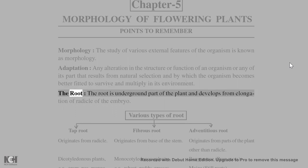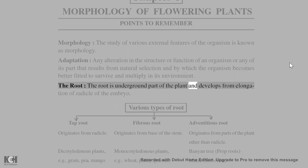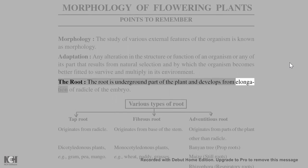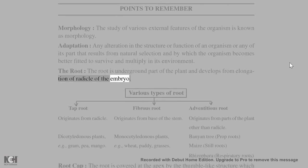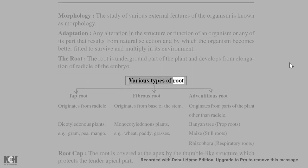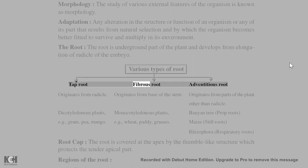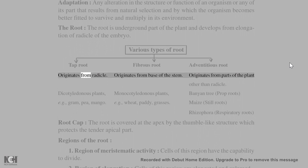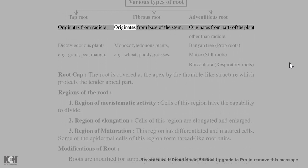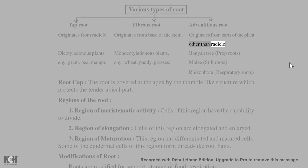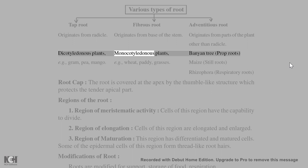The root is the underground part of the plant and develops from elongation of the radicle of the embryo. Various types of roots: tap root originates from the radicle (found in dicotyledonous plants, e.g., gram, pea, mango); fibrous root originates from the base of the stem (monocotyledonous plants, e.g., wheat, paddy, grasses); adventitious root originates from parts of the plant other than the radicle — e.g., banyan tree prop roots.